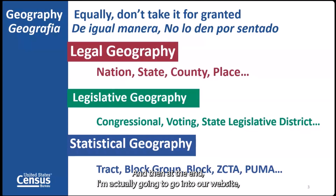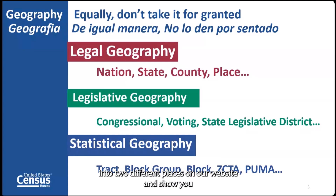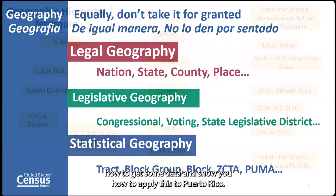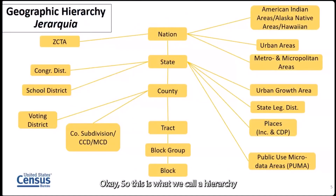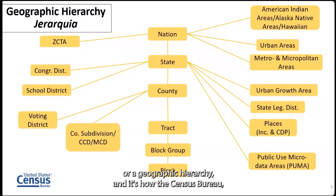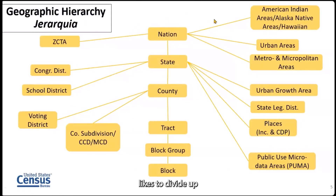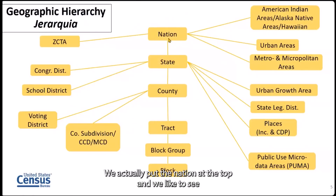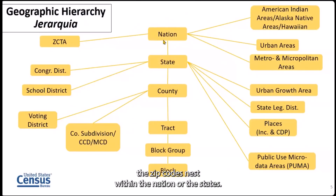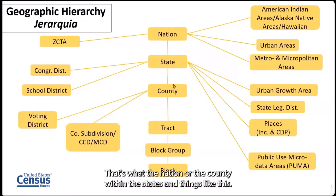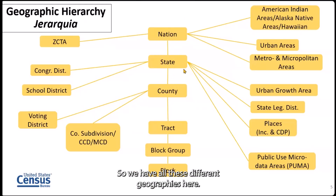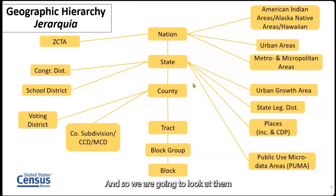I'll talk more about this as I go through the slideshow. At the end, I'm going to go into our website — two different places — and show you how to get some data and apply this to Puerto Rico. This is what we call a geographic hierarchy — how the Census Bureau likes to divide up the nation, putting the nation at the top, with zip codes, states, counties, and other geographies nesting within each other.